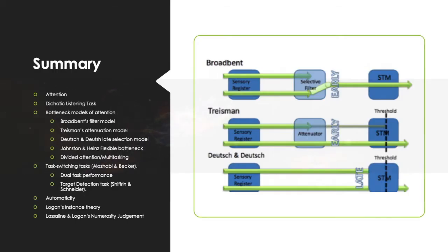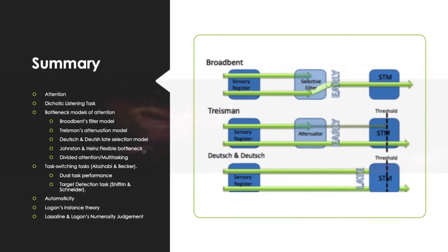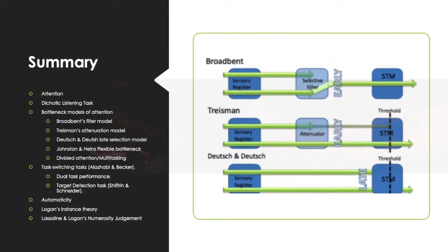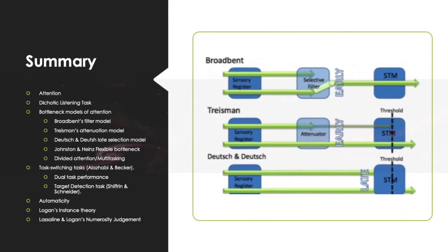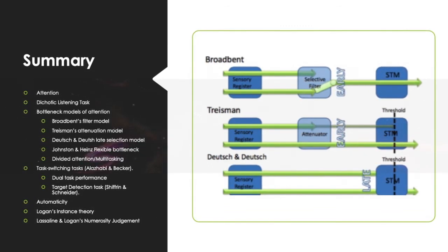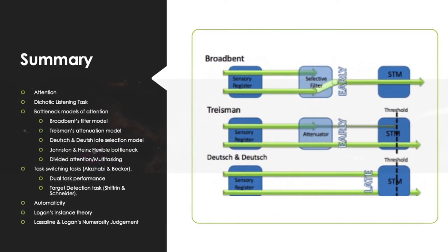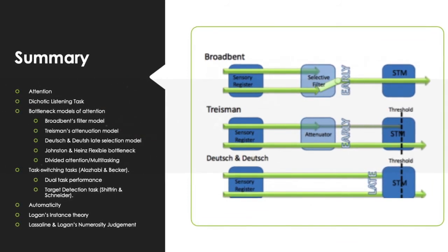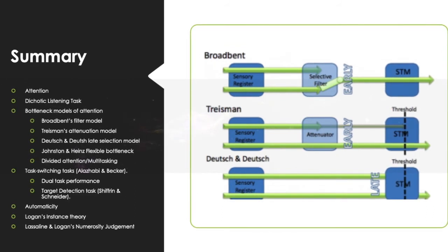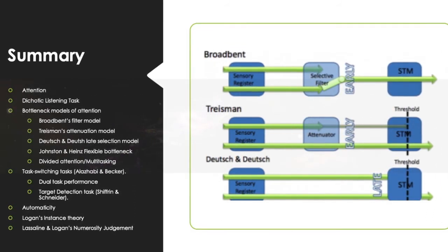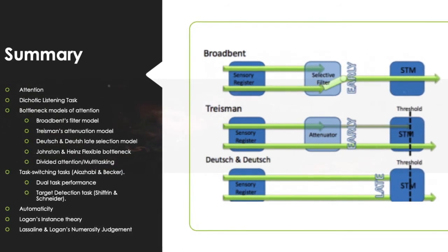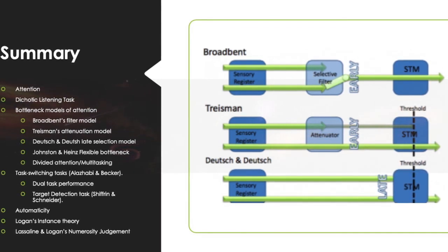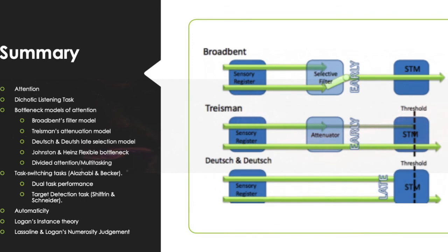In summary, we looked at attention — how it involves alertness, concentration, and selectivity. We looked at the dichotic listening task and Cherry and Moray's findings. We covered the different bottleneck models: Broadbent's filter model, Treisman's attenuation model, the threshold definition, Deutsch and Deutsch's late selection model, and Johnston and Heinz's flexible bottleneck view. We also covered divided attention in the form of multitasking, task switching, dual task performance, Shiffrin and Schneider's target detection experiment, automaticity, Logan's instance theory, and Lassaline and Logan's numerosity judgment. Thanks for watching — join me in the next video where I talk about visual attention.